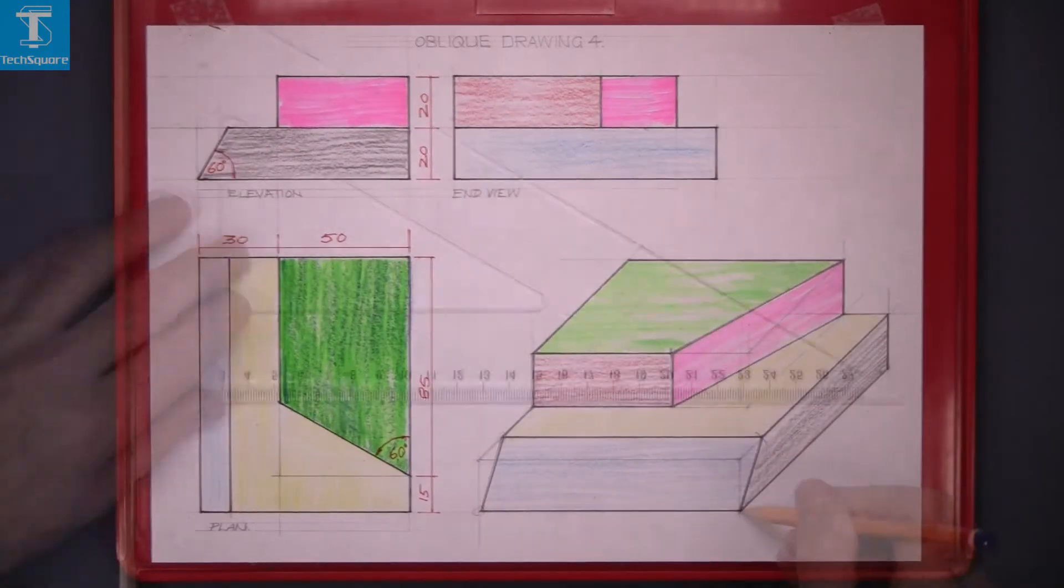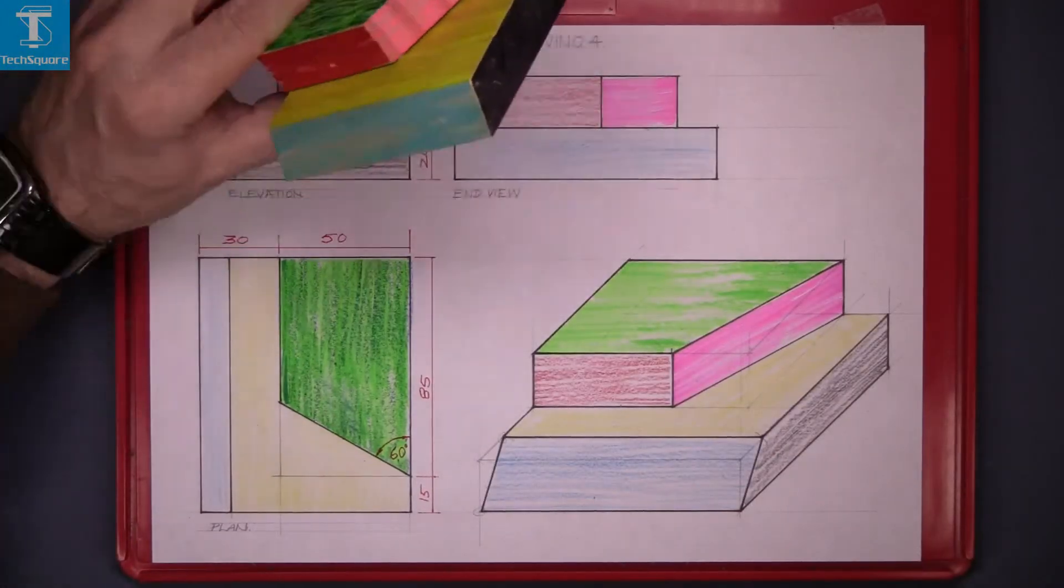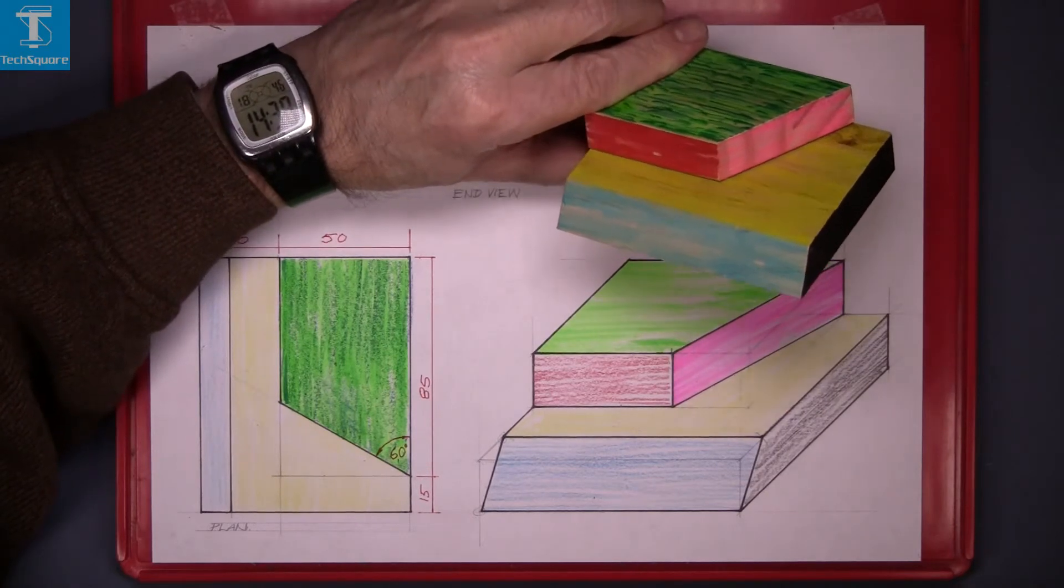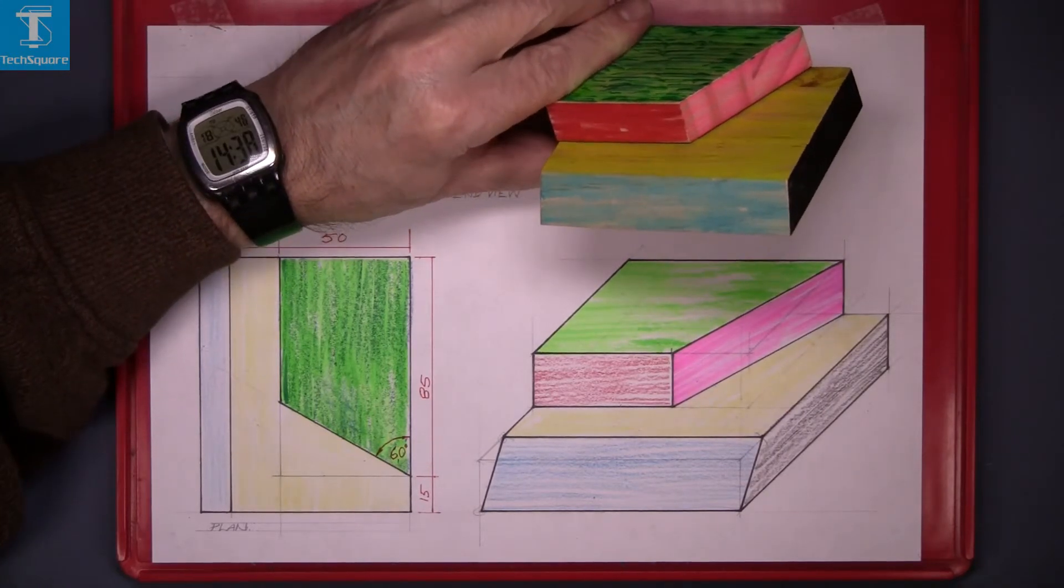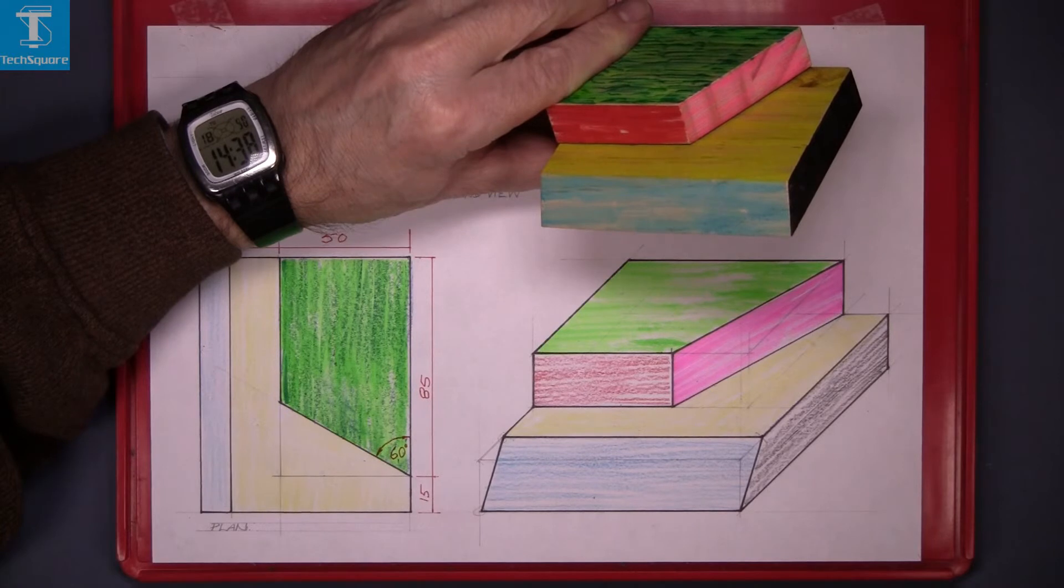So there it is now colored in, and that's what we're looking at there. That's oblique drawing 4 complete.